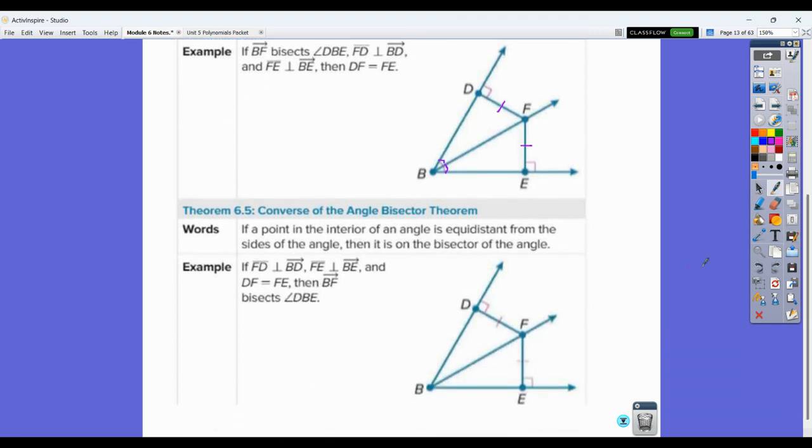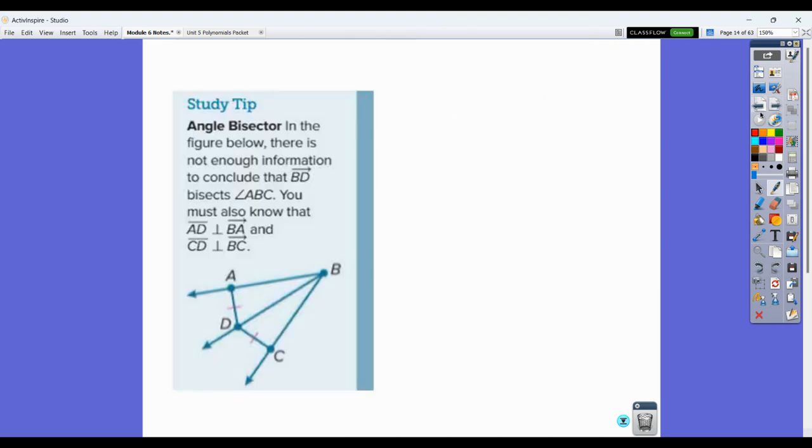The converse of that says that if you have an angle, and you know if a point is in the interior of an angle and it's equidistant from the sides of the angle, so if I know that this point has the distance to there, and the distance to there are the same, then I know it's on the angle bisector. So the if is what's drawn here, the then would be knowing that that is true. So that's your converse of that one.